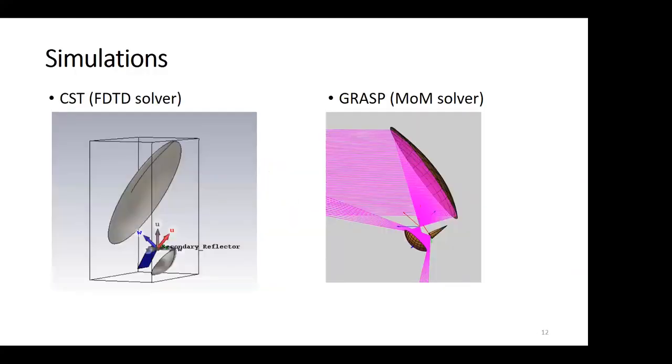For my simulations, I use both CST and GRASP. In CST specifically, the FDTD method, and for GRASP the MOM solver. GRASP is a specialized software for antenna design, so it's very convenient to use, while CST is a bit more general simulation software.